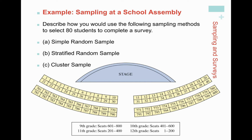How about cluster sampling? With cluster samples, you want heterogeneous subgroups that represent the entire population. So how can I get a cluster that has 9th, 10th, 11th, and 12th graders? Those would be the columns, not the rows. There are 20 columns of seats. I could randomly select however many columns I need to get a sample of size n equals 80. If I chose column number one, that's going to have 9th graders, 10th graders, 11th graders, and 12th graders — it includes seats 1, 21, 41, 61, all the way up to 781.